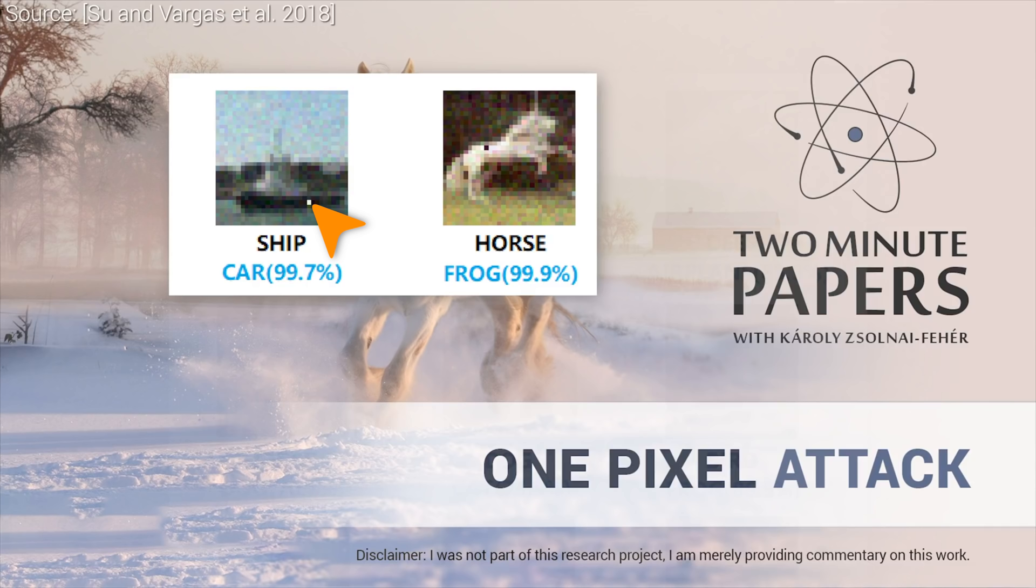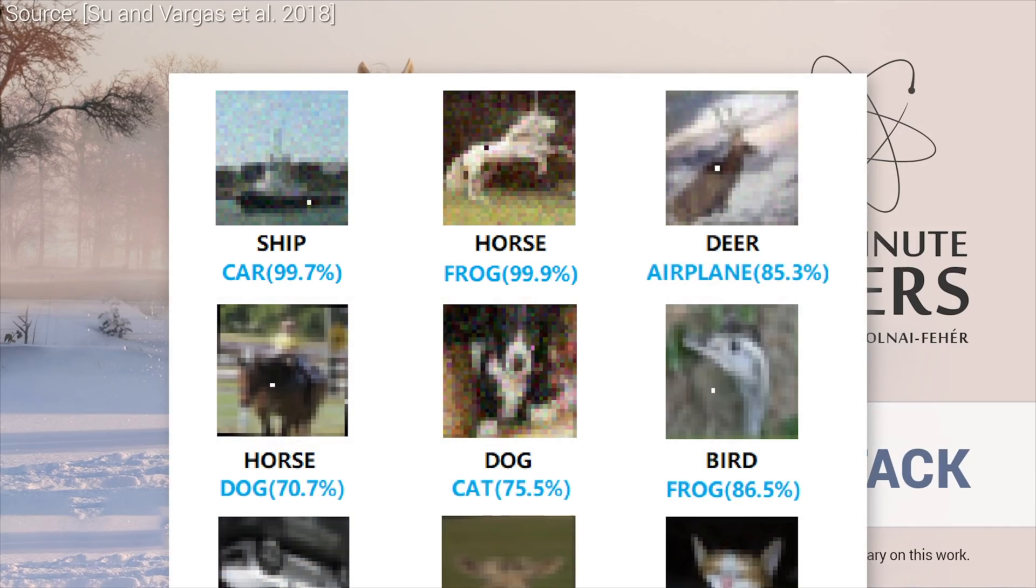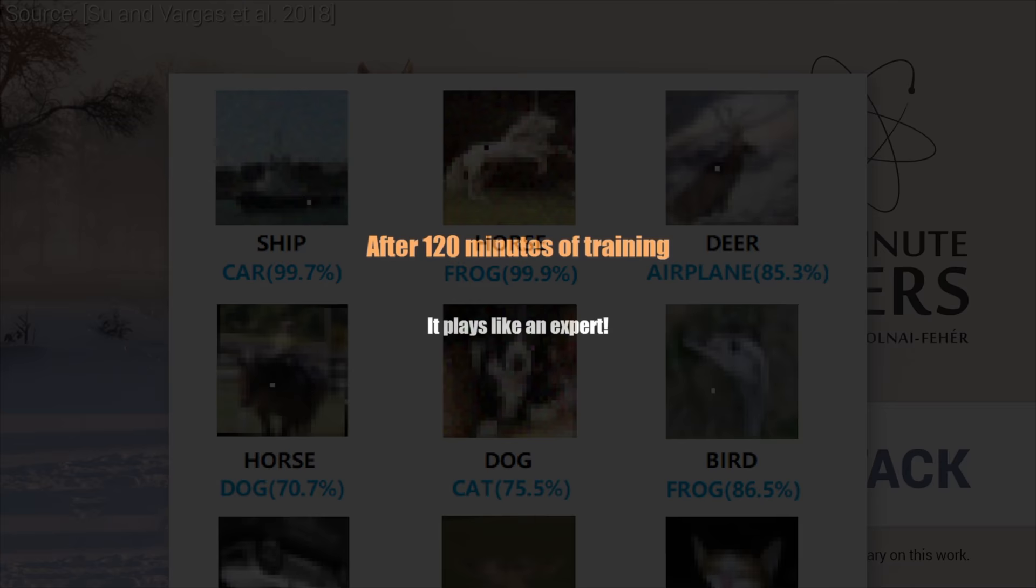Let's have a look at some examples. Changing just this one pixel can make a classifier think that this ship is a car, or that this horse is a frog, and amusingly, be quite confident about its guess. Note that the choice of this pixel and the color is by no means random, and it needs solving a mathematical optimization problem to find out exactly how to perform this.